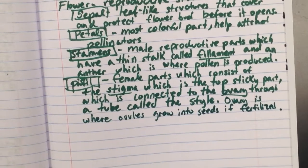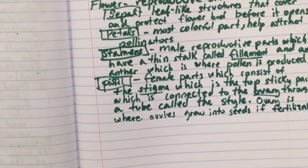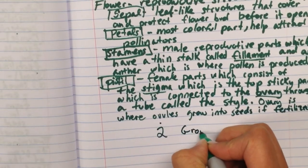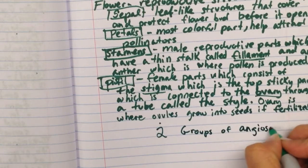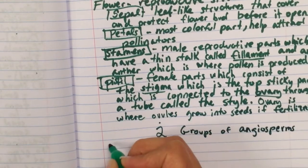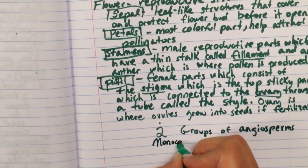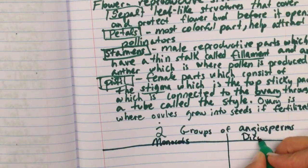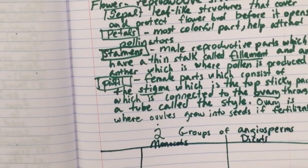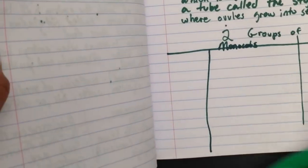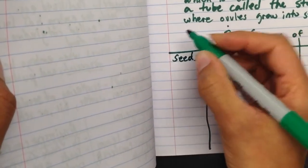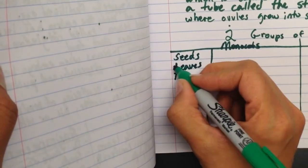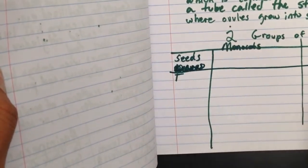All right, now we're going to make a little chart with the differences between the two groups of angiosperms. So there are two groups of angiosperms. We have monocots, and we have dicots. And we are going to look at their seeds, their leaves, flowers. You know what, I'm going to make a little space because we'll probably need a little bit more of that.